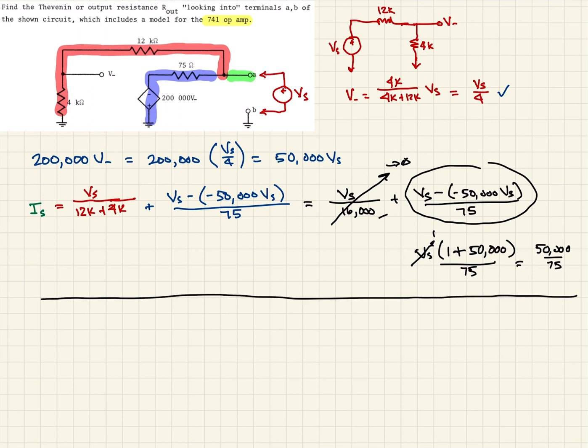So that being the case, using Thevenin analysis, then we can say then that our R out, which is really also equal to our R Thevenin, is going to be equal to our, in Thevenin terms, it's our output voltage divided by our short circuit current. So in this case, that's going to be our VS over our IS. And so in this case, we have the VS still here. And so when we plug these numbers in, we end up getting 75 because the VS is canceled out over 50,000. And so when we calculate that out, it comes to 0.0015 ohms, which is really just 1.5 milli-ohms.